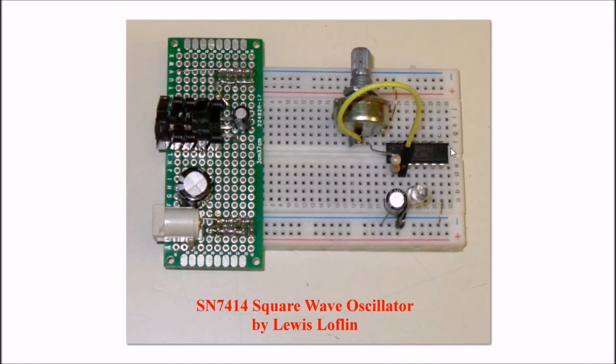This is your integrated circuit, the SN7414, and to set the frequency of your square wave oscillator, all you got to do is a single resistance. In this case, I used a 100k potentiometer in series with a 22k resistor, and a single capacitor. That's all it takes. The LED is here, so you can watch it blink.